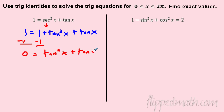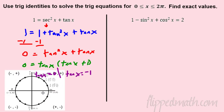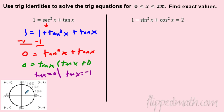Factor out tangent: tangent(tangent + 1) = 0. So either tangent x = 0 or tangent x = −1. For tangent = 0, since tangent = sine over cosine, we need sine = 0, which happens at x = 0, π, and 2π.